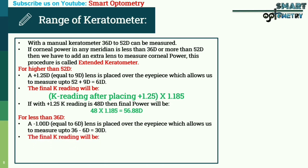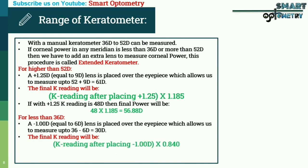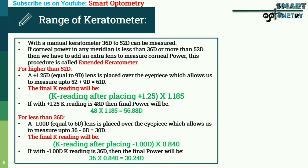The final keratometer reading will be: keratometer reading after placing minus 1 diopter, multiplied by 0.840. For example, if with a minus 1 diopter lens the keratometer reading is 36 diopters, then the final power will be 36 × 0.84 = 30.24 diopters.